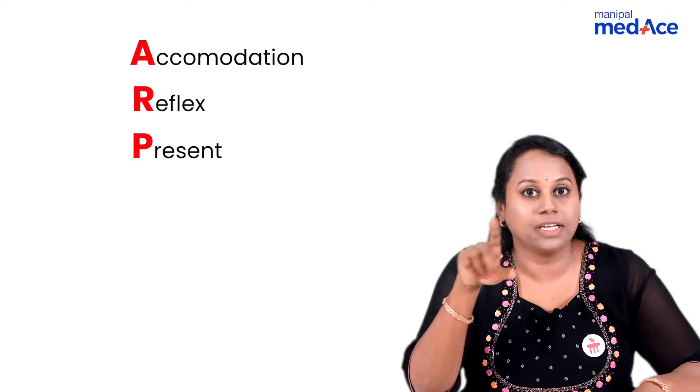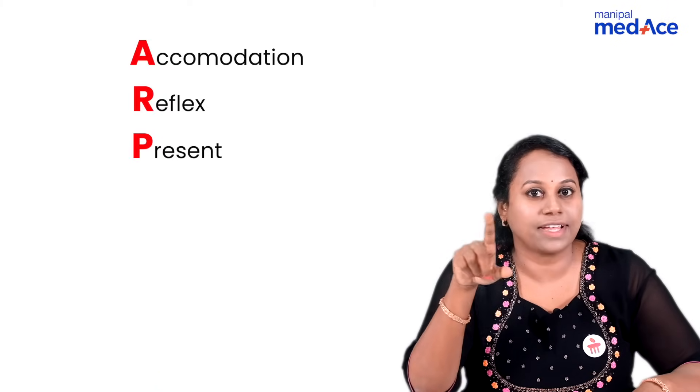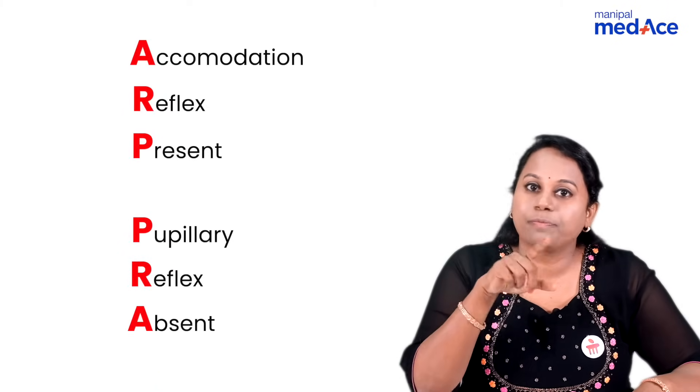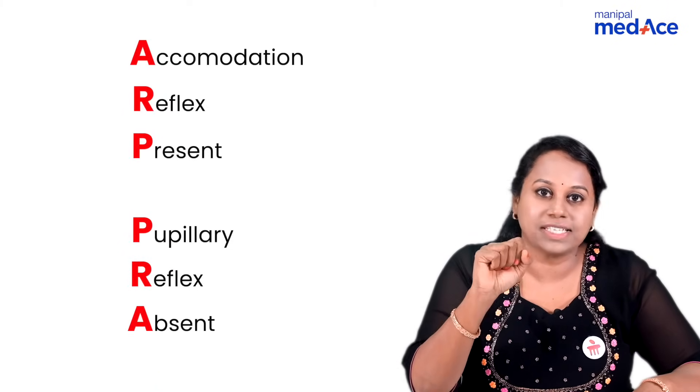To summarize: ARP — Accommodation reflex present. PRA — Pupillary reflex absent.